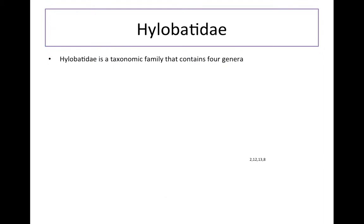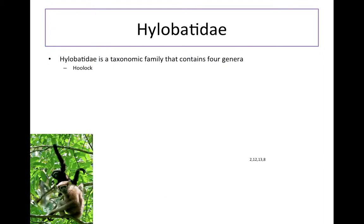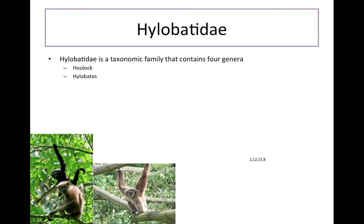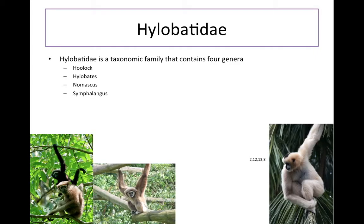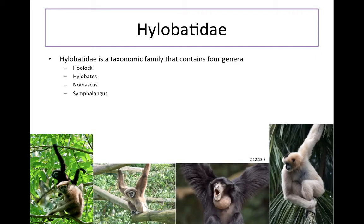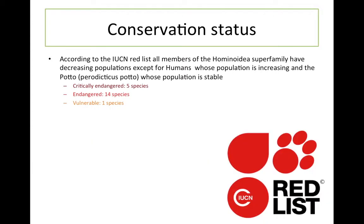Hylobatidae is a taxonomic family that also contains four genera: they have hulak, hylobate, nomascus, and symphalangus, and they have a little more diversity than us — they contain about 18 species.